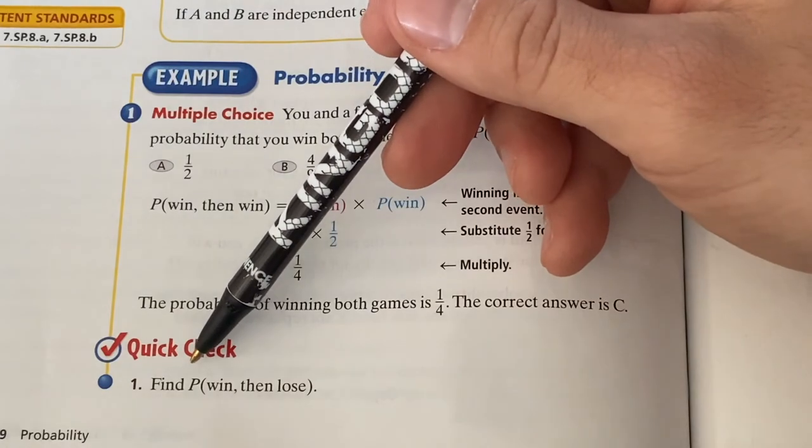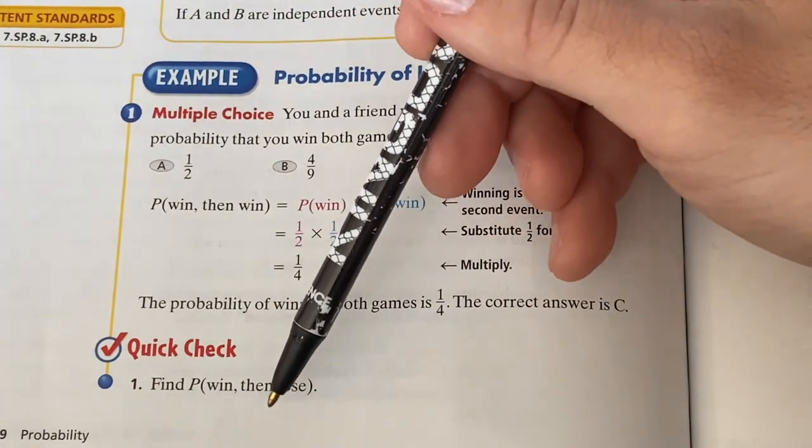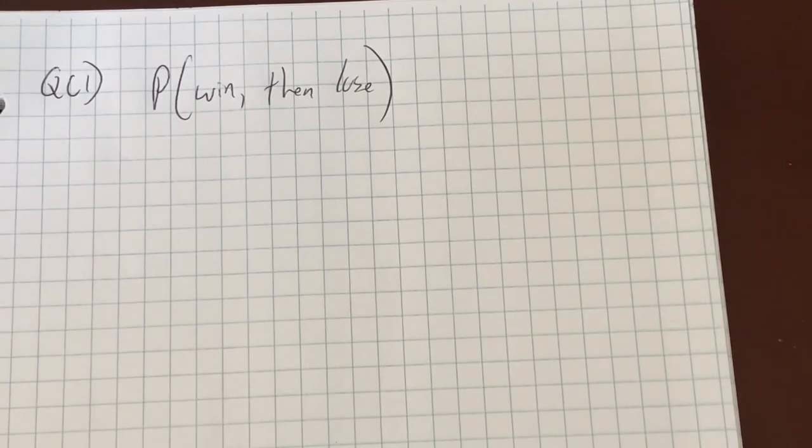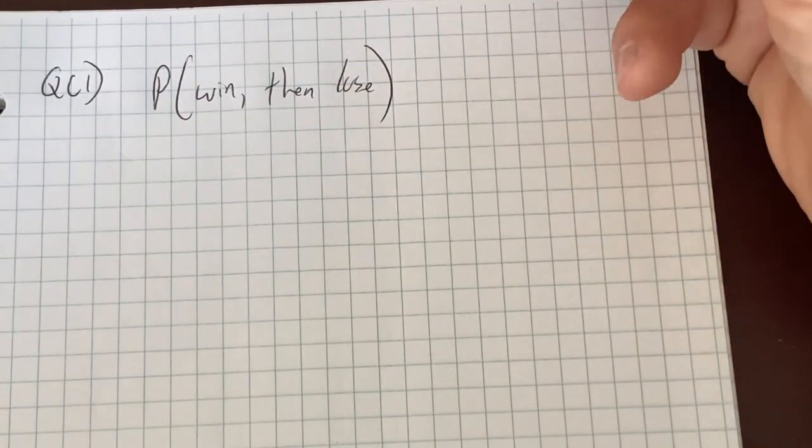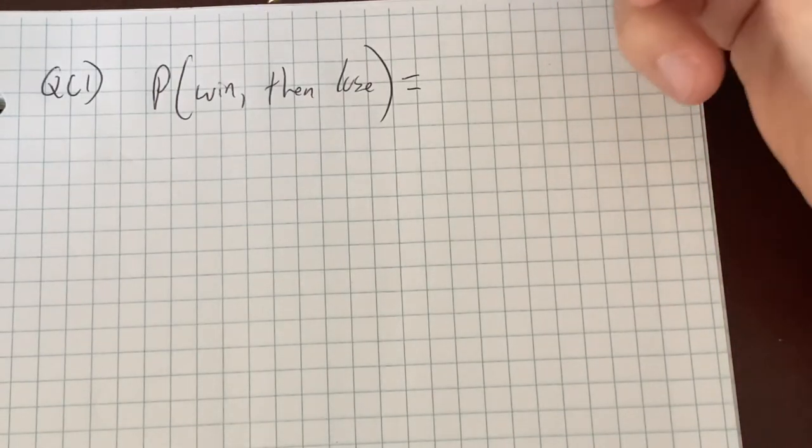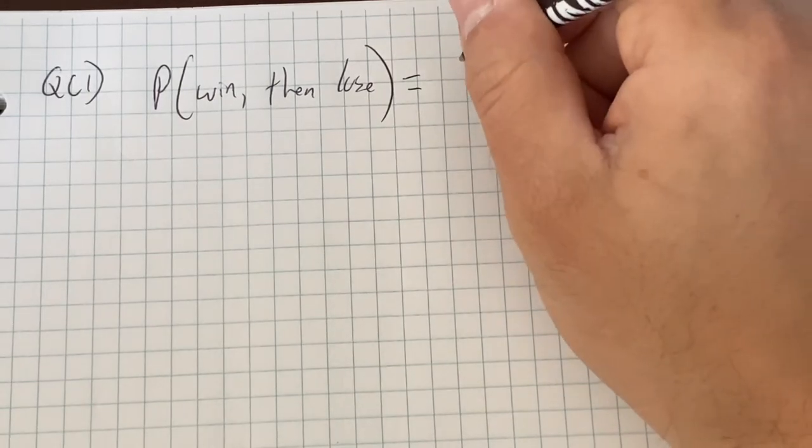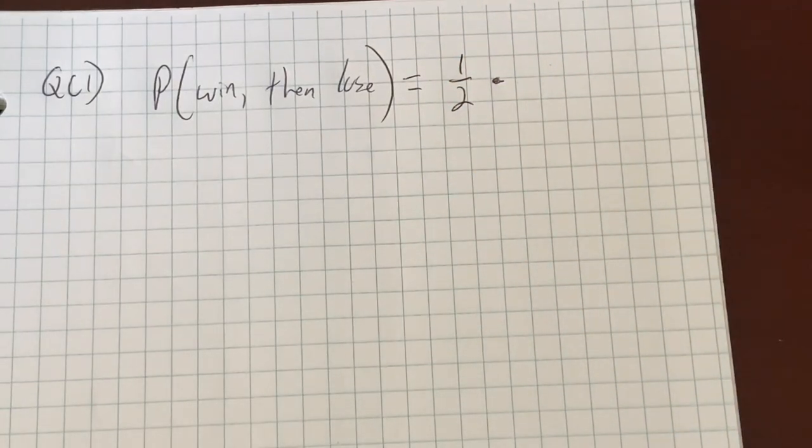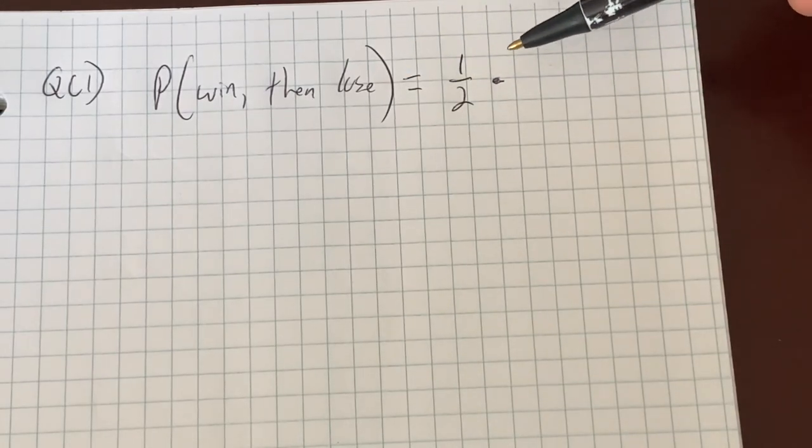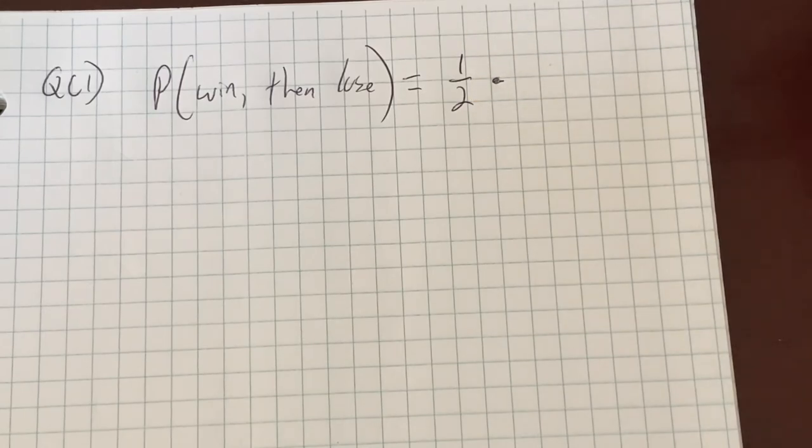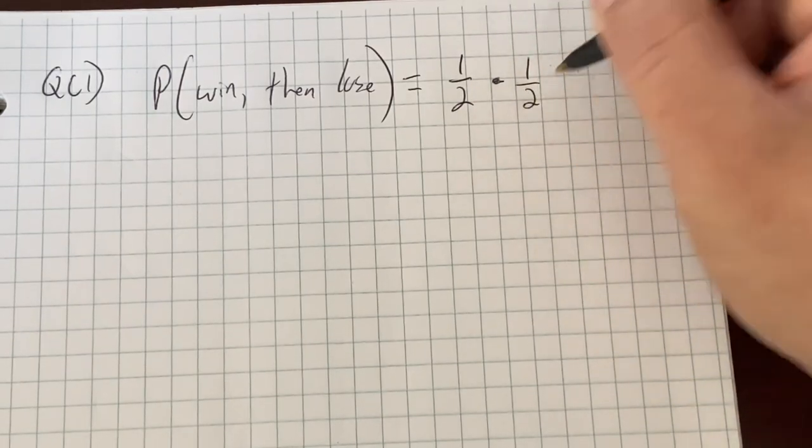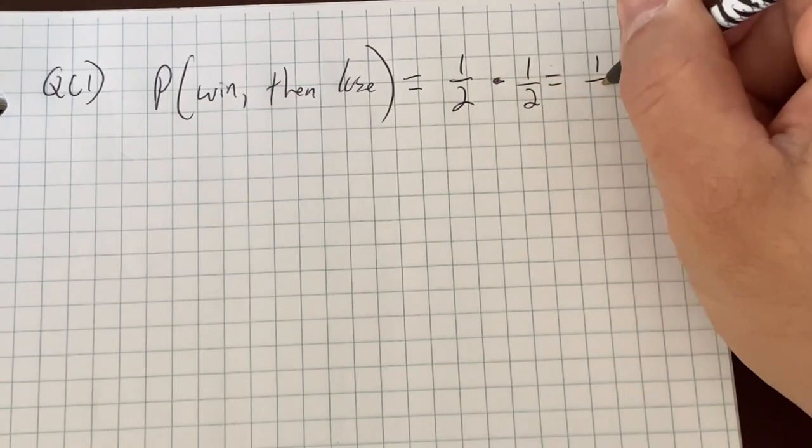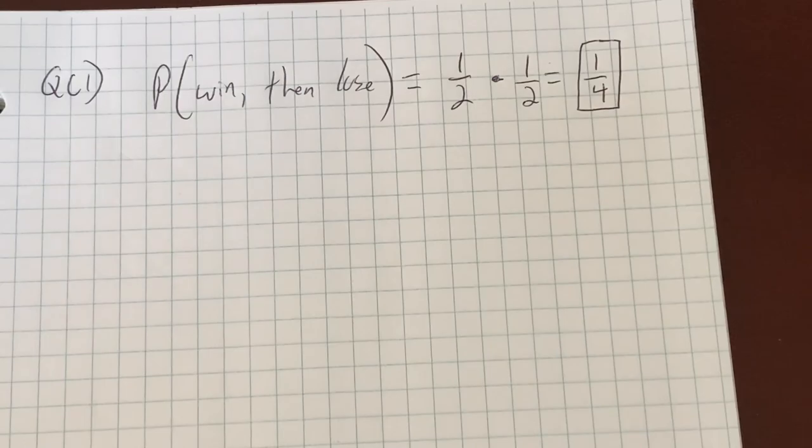Quick check number one here says find the probability that you win and then lose. So we are calculating the probability here of a win followed by a loss. We're going to multiply the two independent probabilities. What's the probability we win? The problem said the probability you win is one half. We will multiply that now times the probability that we lose. Well, interestingly enough, if the probability that you win is one half, what's the probability that you're going to lose? Magically, it's also one half. And that actually gives you the same answer as the example problem. You have a one in four chance of winning the first game and then losing the second game. That's it. Multiply the probabilities.